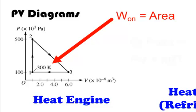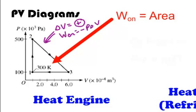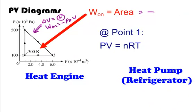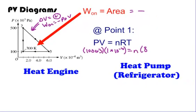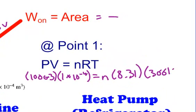To determine if work is positive or negative, look at the hypotenuse — the direction of volume change. If delta V is increasing, work done on the gas is negative. From a given point, if you know pressure, volume, and temperature, you can use PV equals nRT to find the number of moles. For example, with P = 100×10³, V = 1×10⁻⁴, R = 8.31, and T = 300 K, you get n = 0.004 moles.